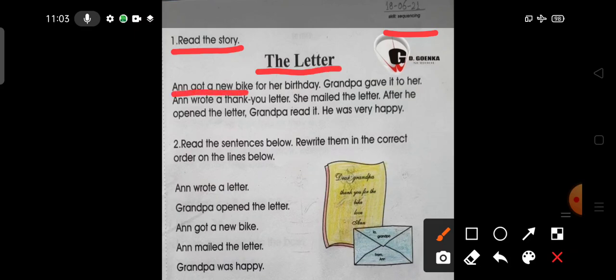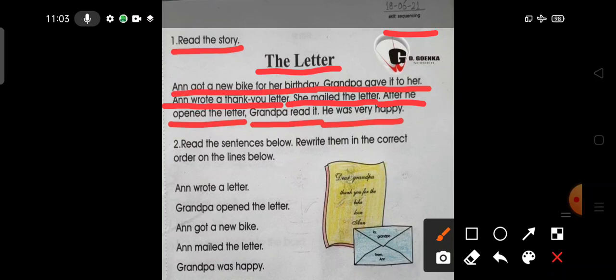First of all, write the date here: 18th June 2021, 18-06-21. Now read the story, The Letter. Anne got a new bike for her birthday. Grandpa gave it to her. Anne wrote a thank you letter. She mailed the letter. After he opened the letter, Grandpa read it. He was very happy.